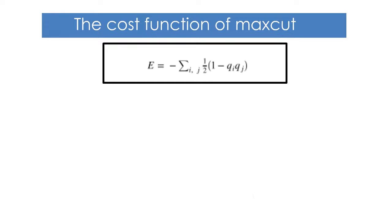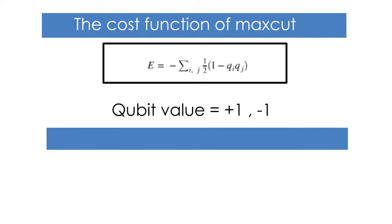The cost function of maxcut is given below. Qubit have value of minus 1 or plus 1. For the binary number of qubo, the cost function will be.